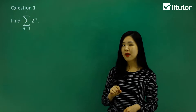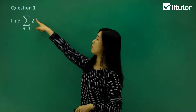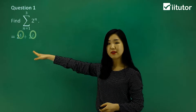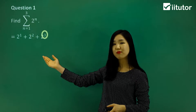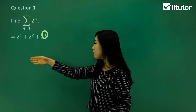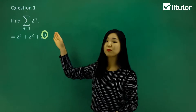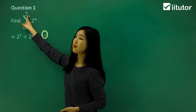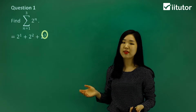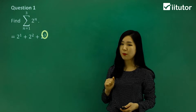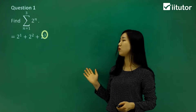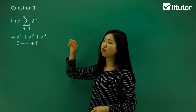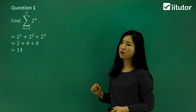Let's start with n equals 1. The n is the power, so we replace the power with 1. Then plus, replace the power with 2. Then plus, replace the power with 3. So it's 2 to the power of 1, plus 2 to the power of 2, plus 2 to the power of 3. We don't go any further because the top of the sigma notation says 3. Simplifying: 2 to the power of 1 is 2, 2 to the power of 2 is 4, and 2 to the power of 3 is 8. Add it all up — it should be 14.